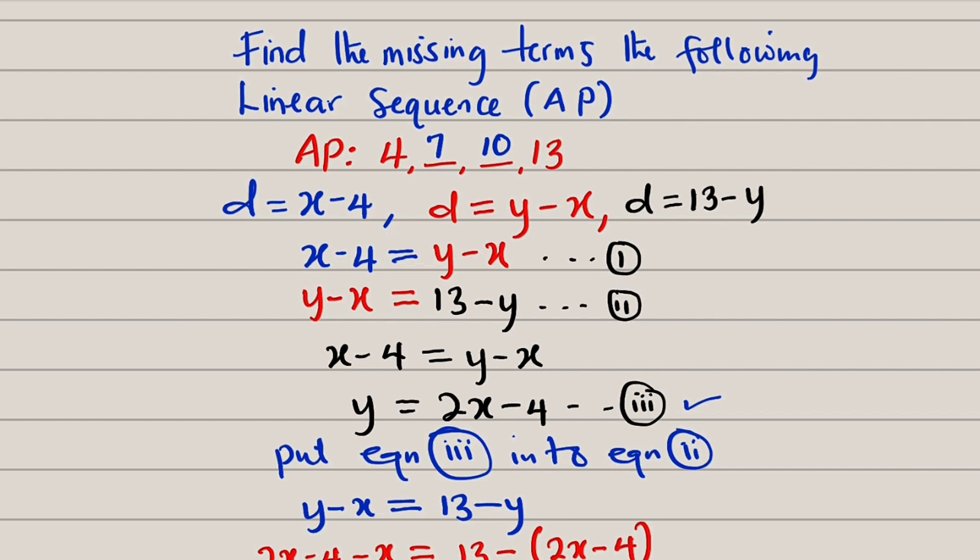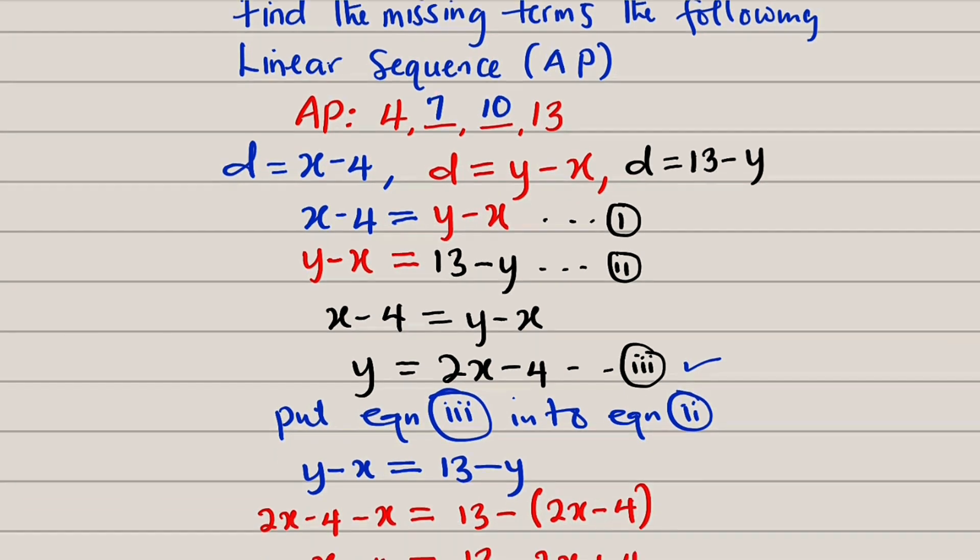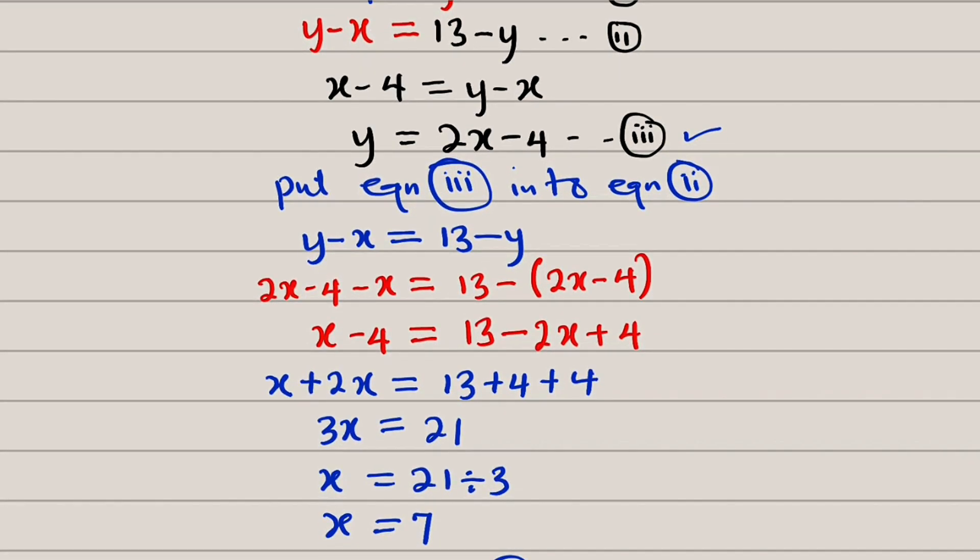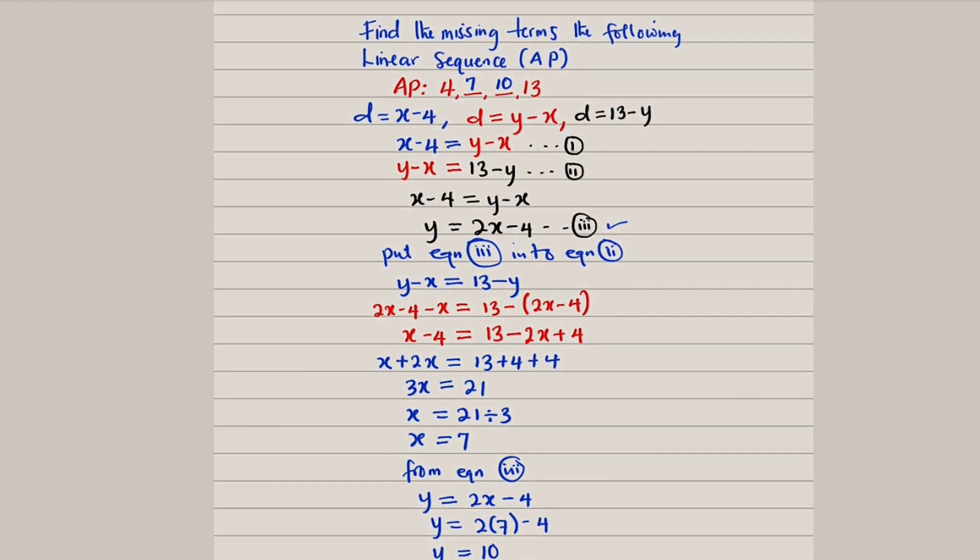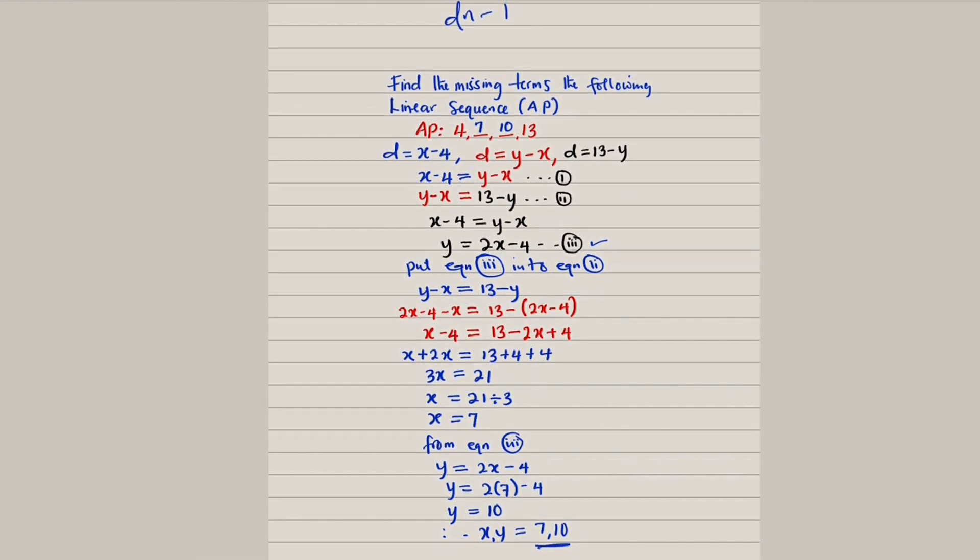And the values we are looking for, which are the second and the third term, are said to be 7 and 10 respectively. And this is all I have for you today. Thank you for watching. Do have a nice day.